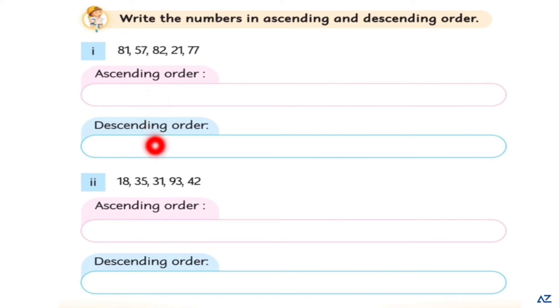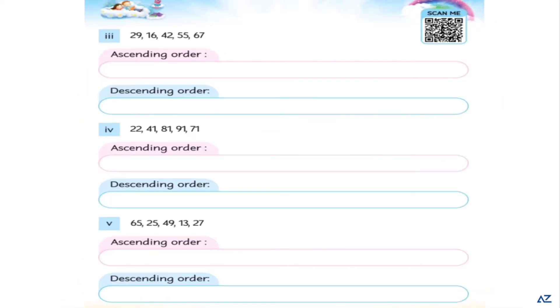In descending order 81, 57, 82, 21 and 77. Like this, do all the given numbers in ascending and descending orders.